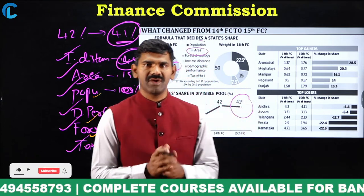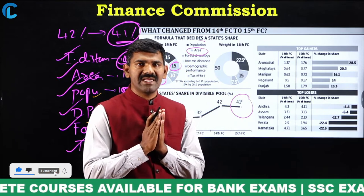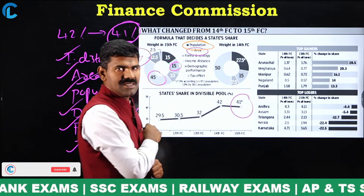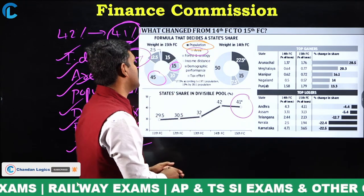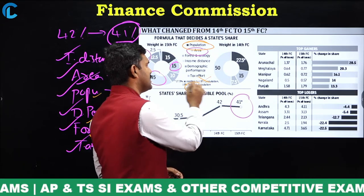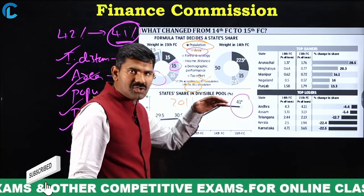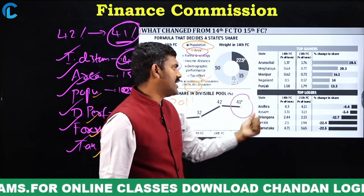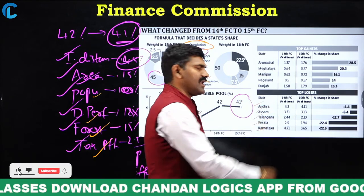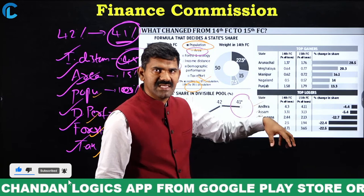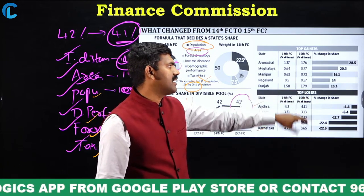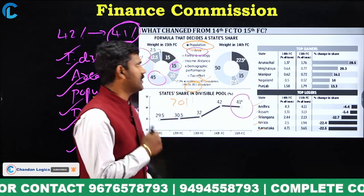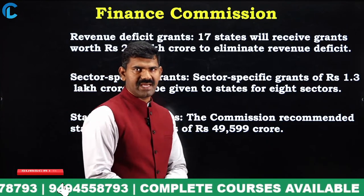An important issue here is with respect to population. In the 15th Finance Commission, we are considering not the 1971 population but the 2011 population. This 2011 population is putting some states at a disadvantage — states like Andhra Pradesh, Assam, Telangana, Kerala, and Karnataka, whose population percentages have decreased, are getting less money compared to other states.